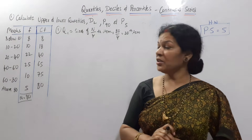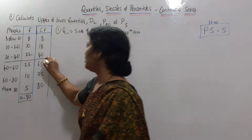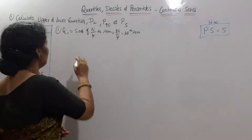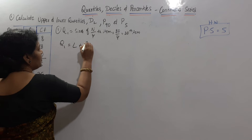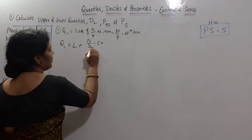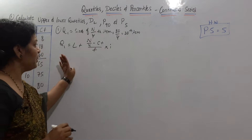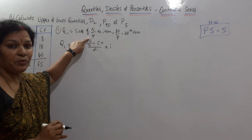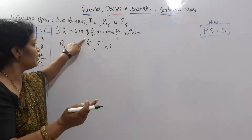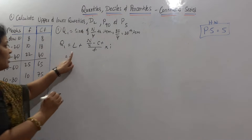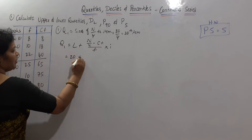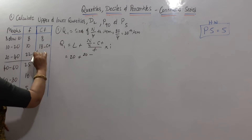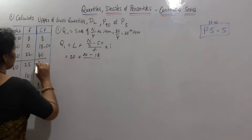In the CF column, you have to see where the 20th item lies — you can mark a line with pencil, it will be easy to identify. Now we'll go for the second formula: Q1 is equal to L plus (n/4 minus CF) by frequency into I. Earlier for median we used n/2, but now here it is n/4 because Q1 uses n/4. So L is here 20 — the lower class interval. n/4 is already done as 20, minus CF which is 18 — the cumulative frequency above — and frequency is 22.